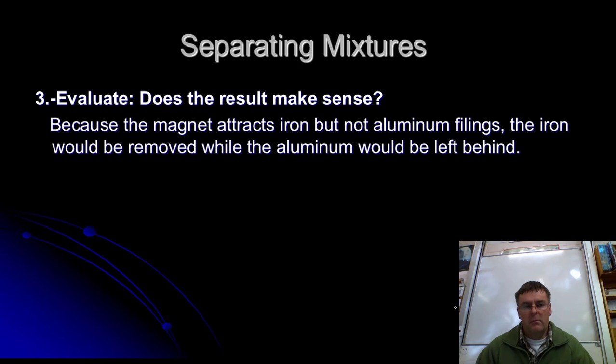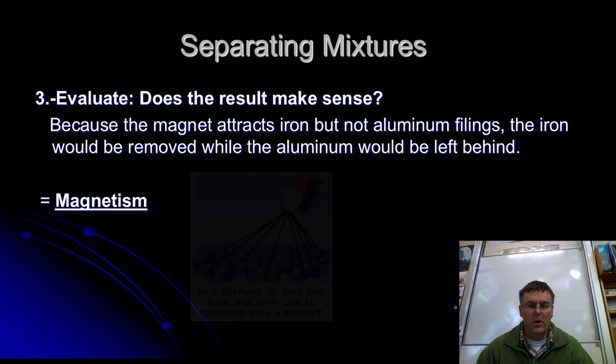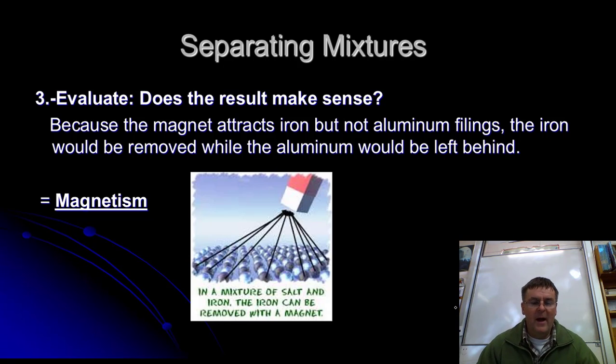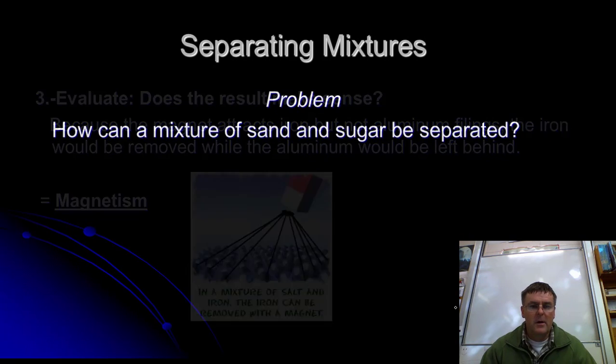So because the magnet attracts the iron, the iron's going to be taken away. Aluminum's left behind. And so magnetism works. Magnetism would be our separating technique we would use. Here's a picture of salt and iron, but the same technique. The irons get pulled out and leaves the salt behind.